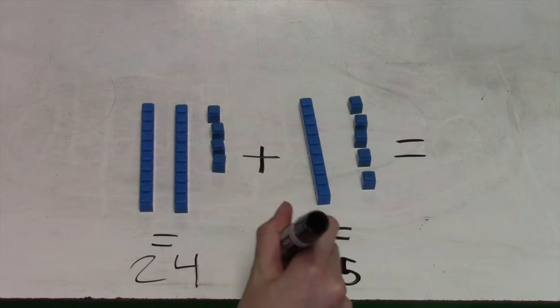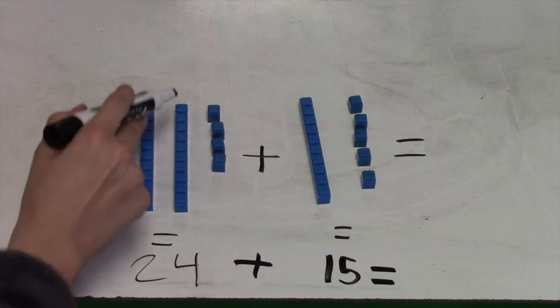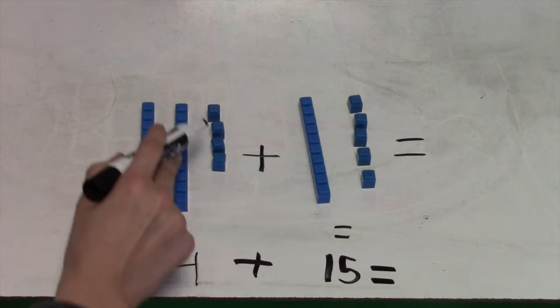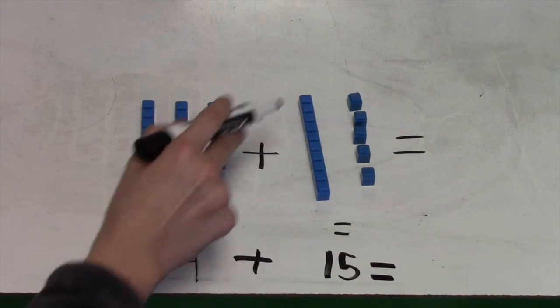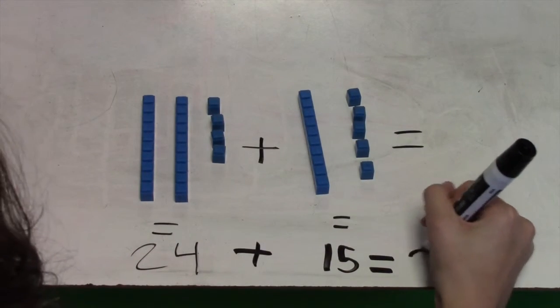Now you're going to add 24 plus 15 by counting the 10s blocks and the 1s blocks. So, 10, 20, 30, 31, 32, 33, 34, 35, 36, 37, 38, 39. So, our answer is 39.